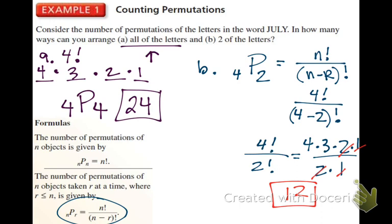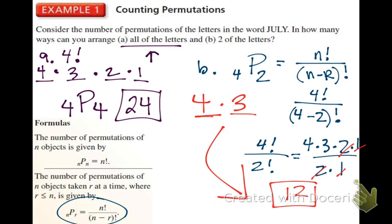If you had used the counting principle: we're using any combination of two letters, so there are two places. How many options for the first letter? Four. Once you use one, how many options for the second? Three. What's 4 times 3? 12. So the counting principle gives the same result, but the formula is fail-proof.